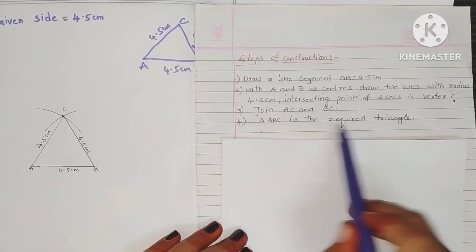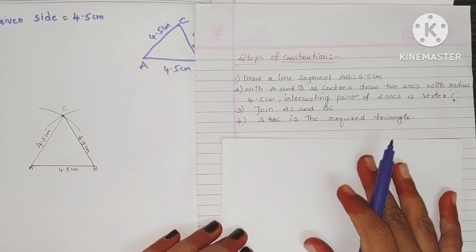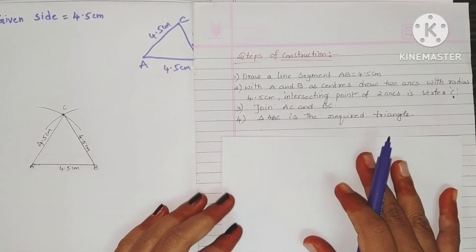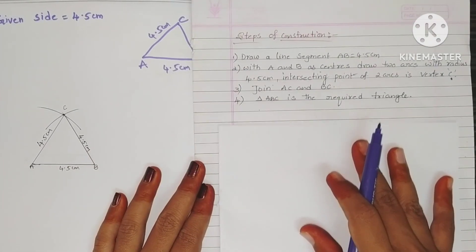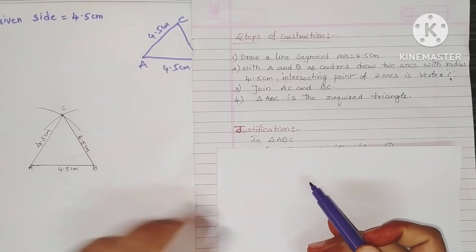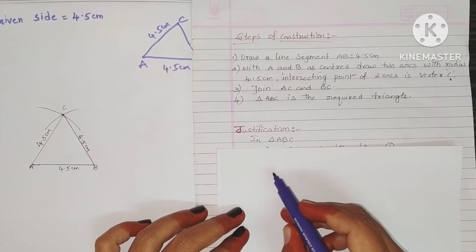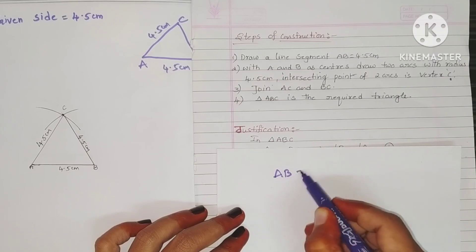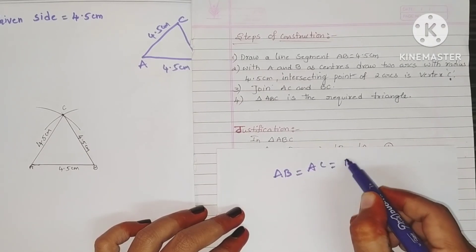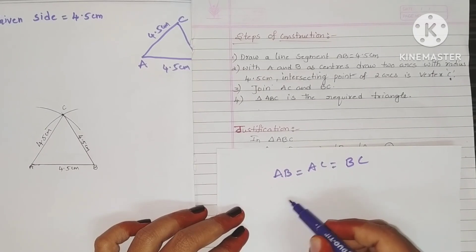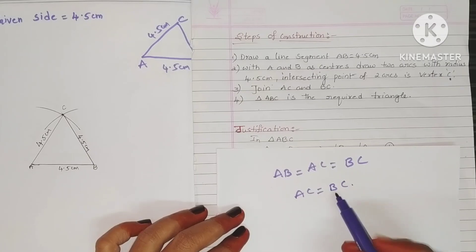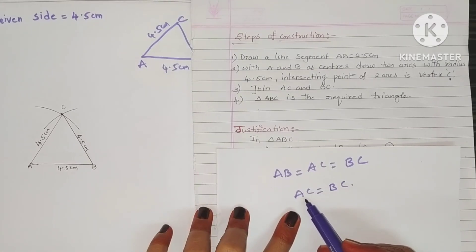This is the required equilateral triangle. In the question they are asking to justify the construction, so we have to justify it. Justification: In triangle ABC, we know the three sides are equal — AB equals AC equals BC. First, taking AC equals BC, we know that angles opposite to equal sides are equal.